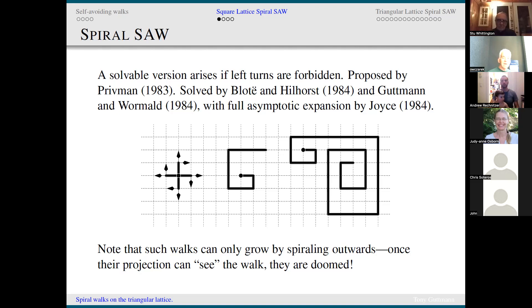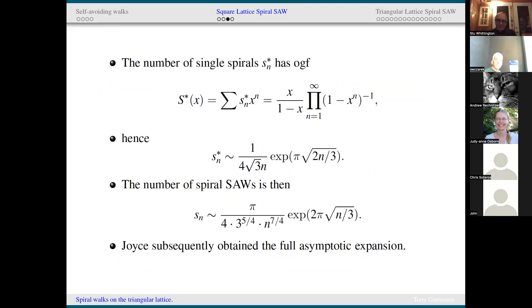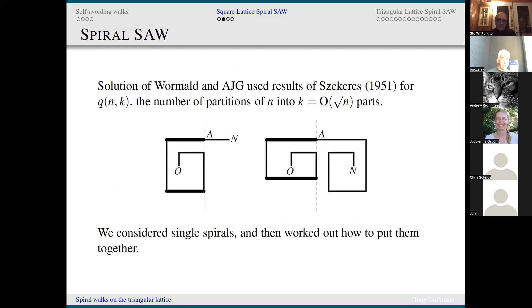So the idea is you can either go straight ahead or turn right. And if you look at the central picture here, you can see that what happens is that you start to produce a spiral. You start to spiral outwards. And at some point, you'll either continue spiraling outwards, making larger and larger spirals induced by this constraint, or you'll start to turn inwards. And once you start to turn inwards, you're doomed because you'll get into a smaller and smaller spiral. Such walks can only grow by spiraling outwards, and once their projection can see the walk, they are doomed.